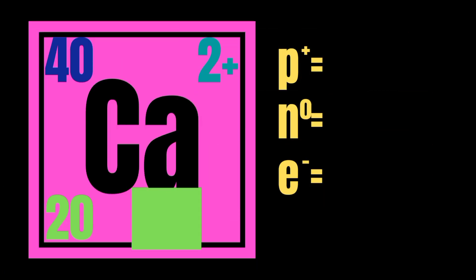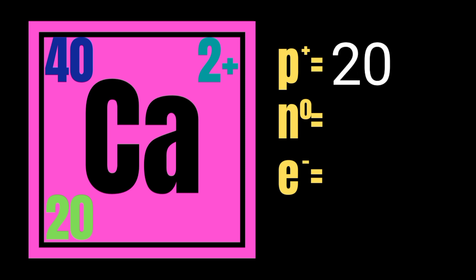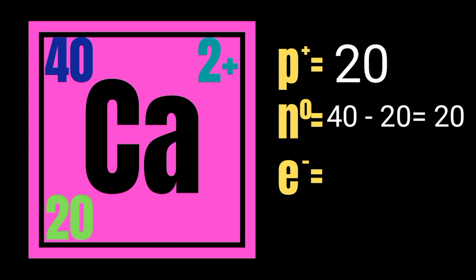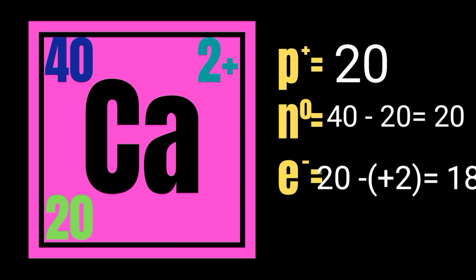Let's have an example: the calcium ion. The atomic number is 20 and the mass number is 40. Since the atomic number equals the number of protons, the number of protons is 20. To get the number of neutrons, subtract the atomic number from the mass number: 40 minus 20 equals 20. For electrons, electrons equal the atomic number minus the charge. In this case, we have a 2-positive charge, so 20 minus 2 equals 18 electrons.